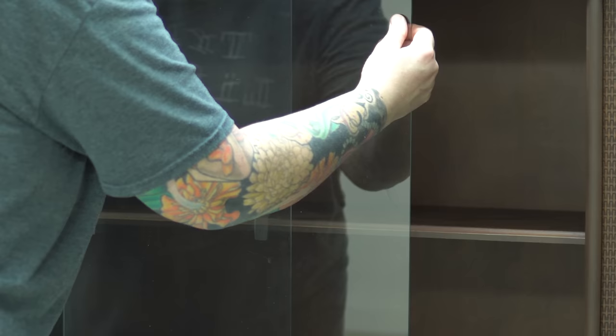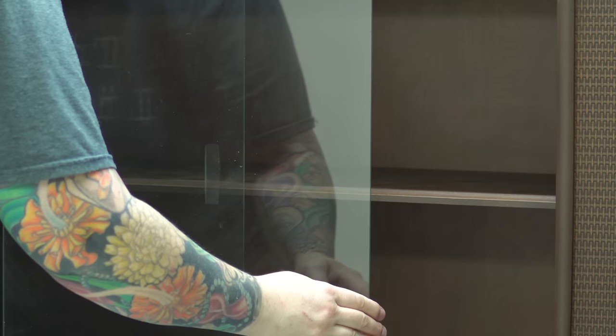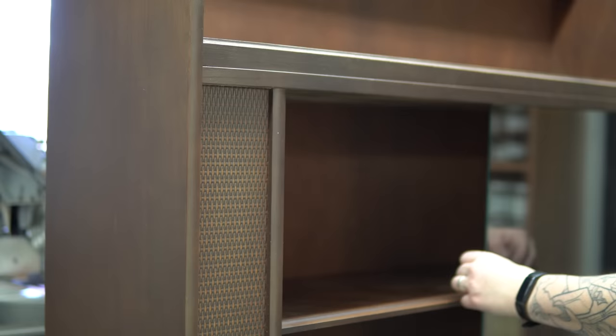And just to kind of show you here, these glass doors normally if they're removable, you can lift them up slightly and pull them out of their track. I looked this over very carefully without taking off the side panels or the top or bottom. These doors are not coming off.